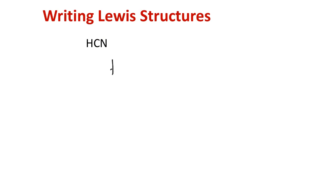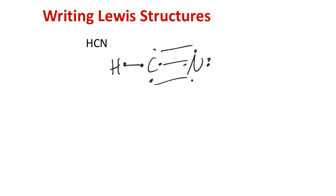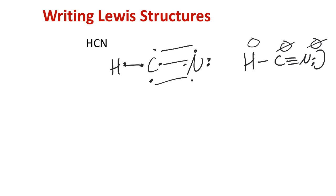For HCN, one approach uses a dot diagram: pair up, make a triple bond, then a single bond, ending up with H-C≡N with a lone pair — keeping the general rule that nitrogen forms with a zero formal charge, carbon with zero, and hydrogen with zero formal charge.